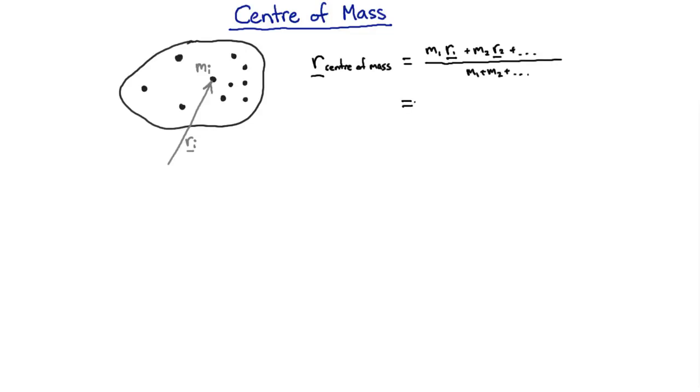So in summation notation that would be, so the sum of all the masses added up, that's the total mass, and this is the mass weighted positions. So let's look at what this thing is.